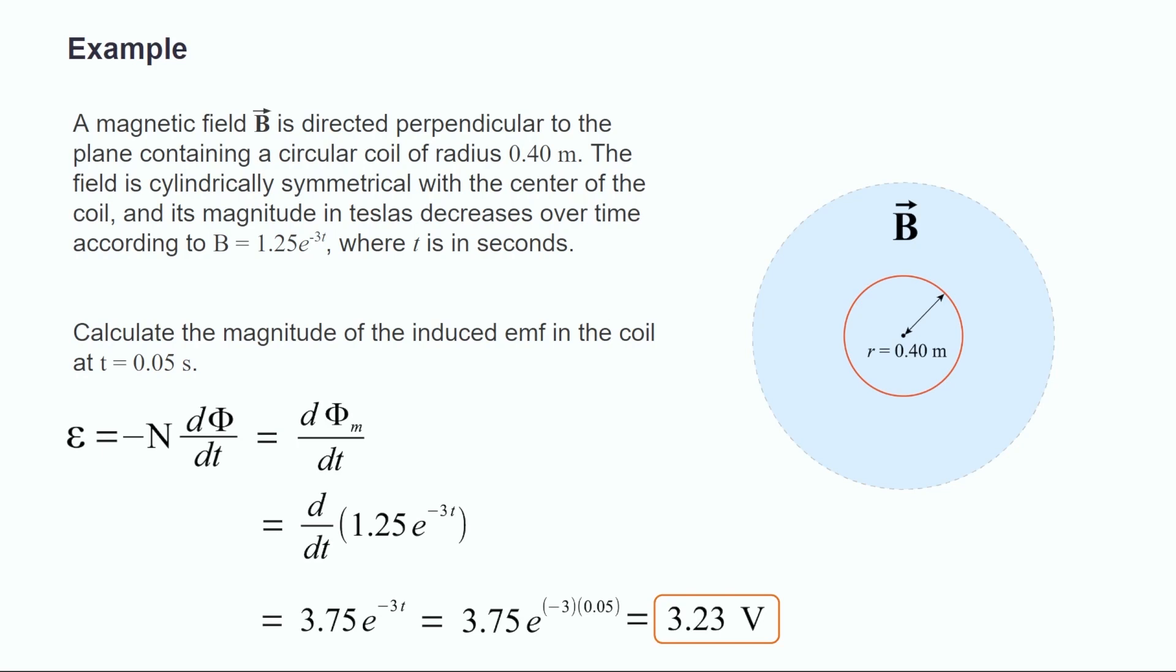Lastly, all we have to do is substitute 0.05 for t and evaluate, which tells us that the EMF at 0.05 seconds is 3.23 volts.